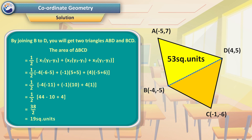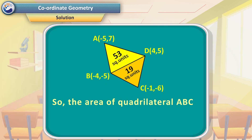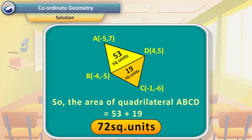The area of triangle ABD = 53 square units and the area of triangle BCD = 19 square units. Therefore, the area of quadrilateral ABCD = 53 + 19 = 72 square units.